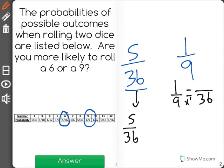To get from 9 to 36, I multiplied by 4, so I'll do the same on top. To find out that 1/9 is equal to 4/36.